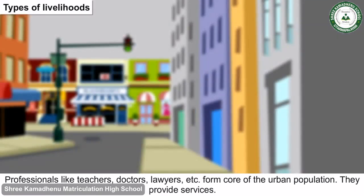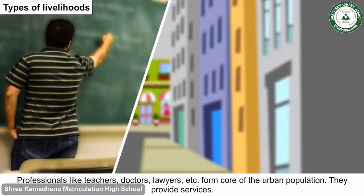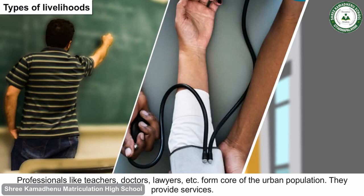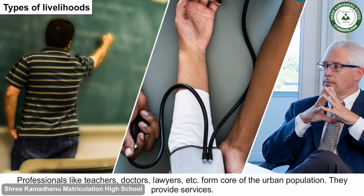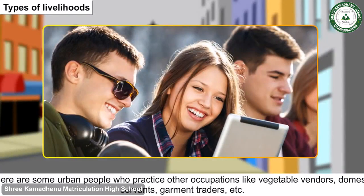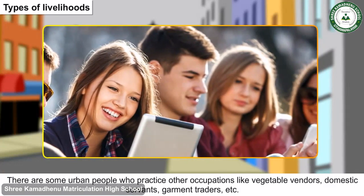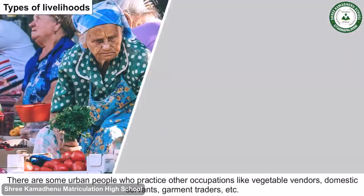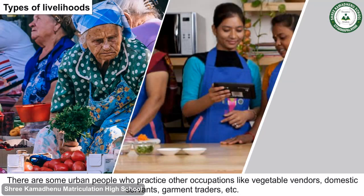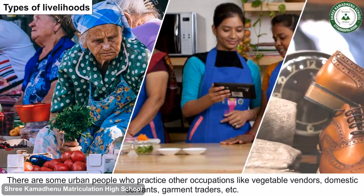Professionals like teachers, doctors, and lawyers form the core of the urban population and provide services. There are also urban people who practice other occupations like vegetable vendors, domestic servants, garment traders, etc.